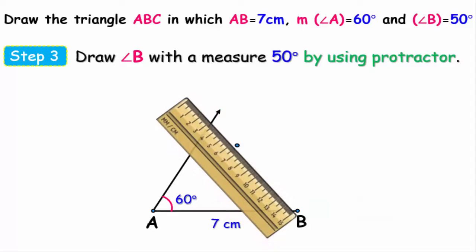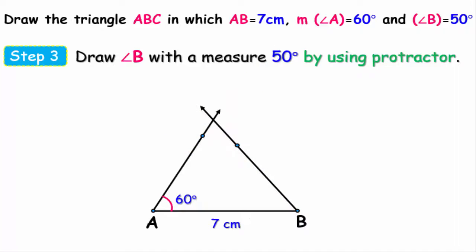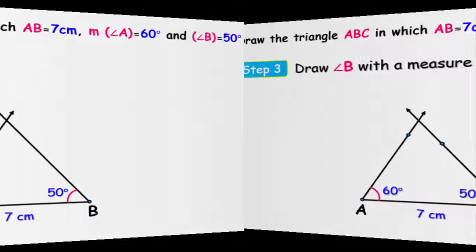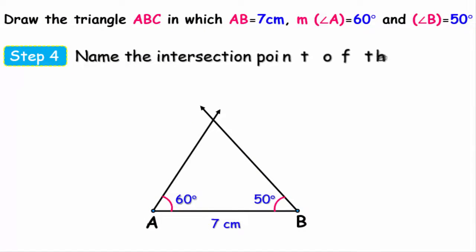Draw another ray that starts from point B and goes to the dot. Now we have drawn angle B whose measure is 50 degrees. Don't forget to write the measurements of the angles on the triangle.